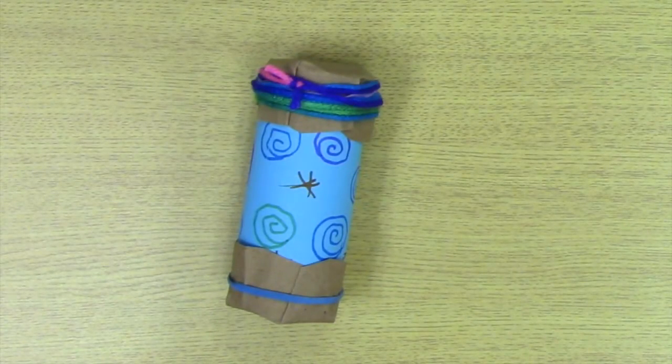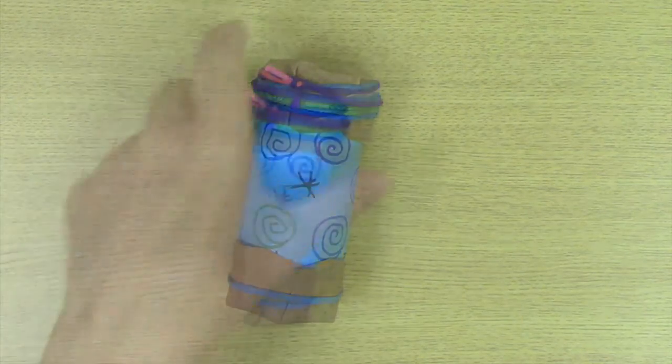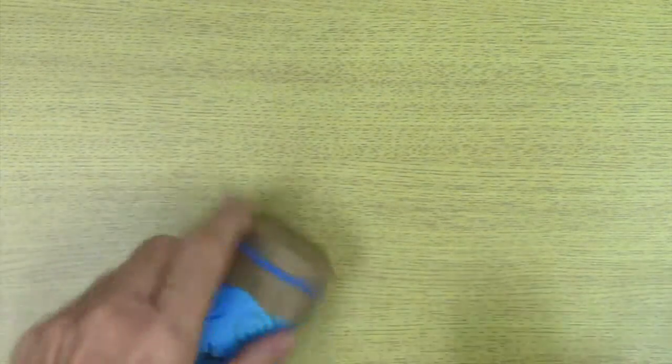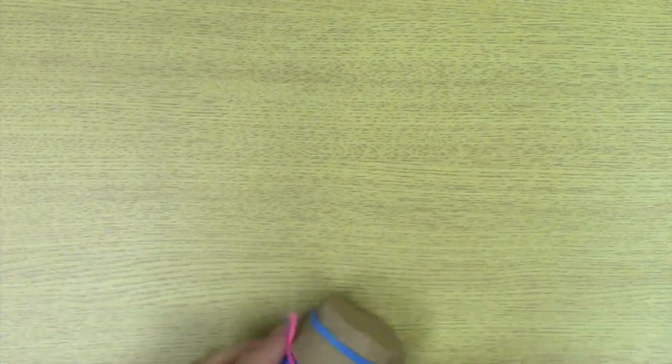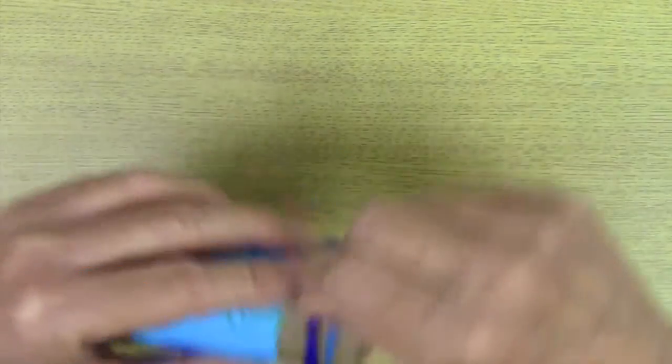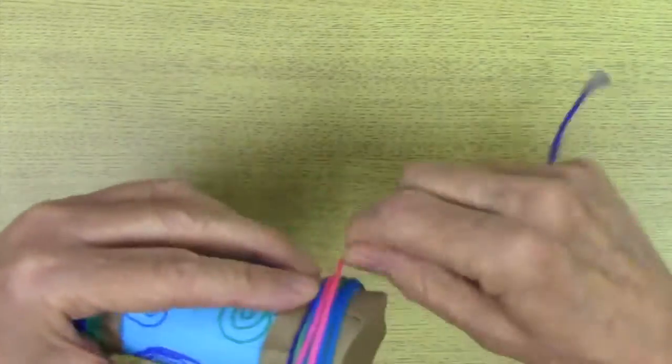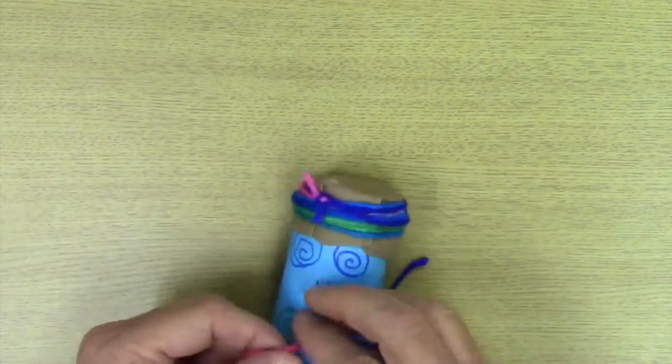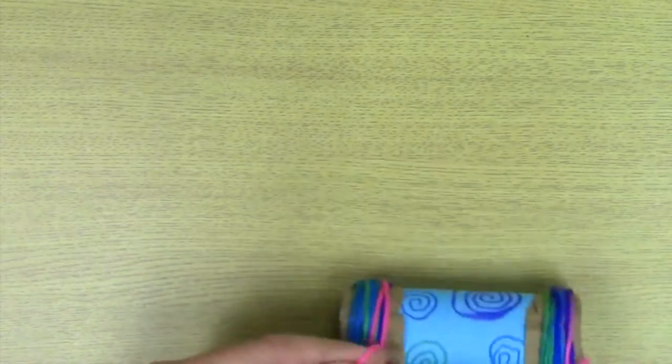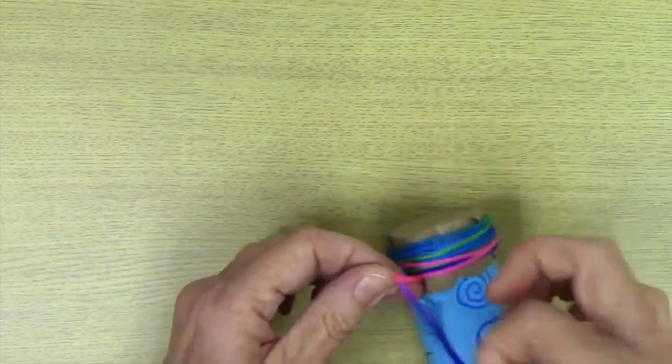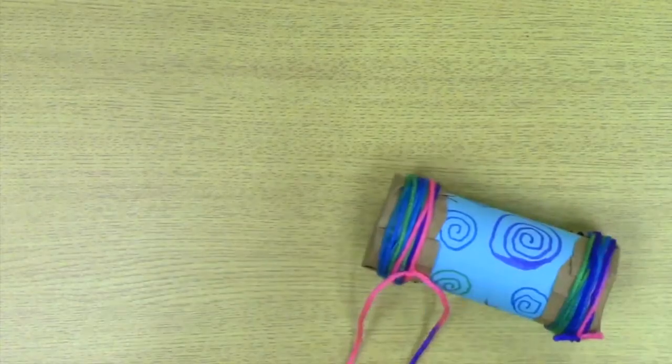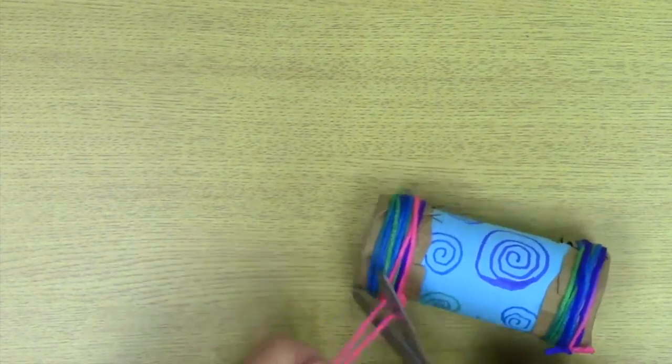And you do the same thing on the other side. I'm going to leave a little tail so we can tie and then just wrap the yarn around. And there you have your shaker.